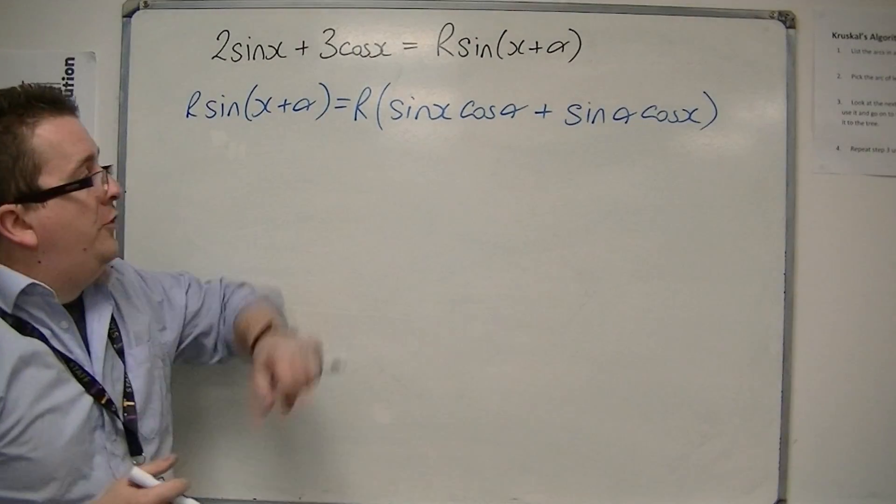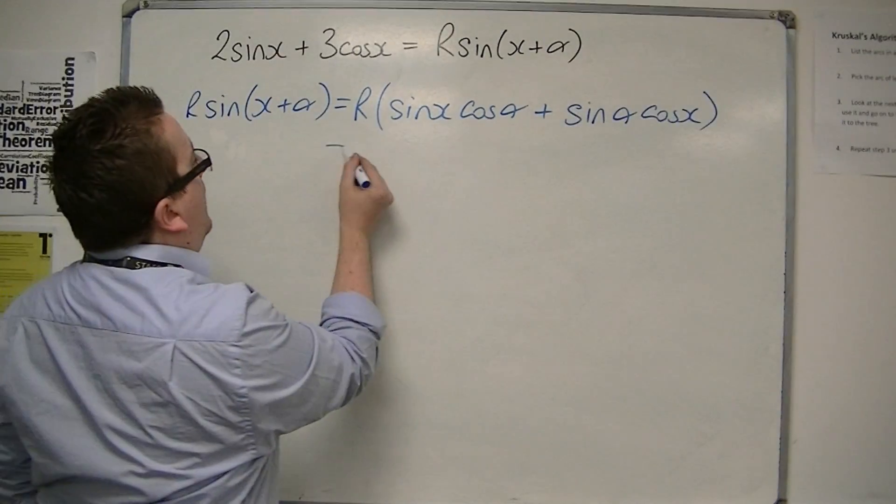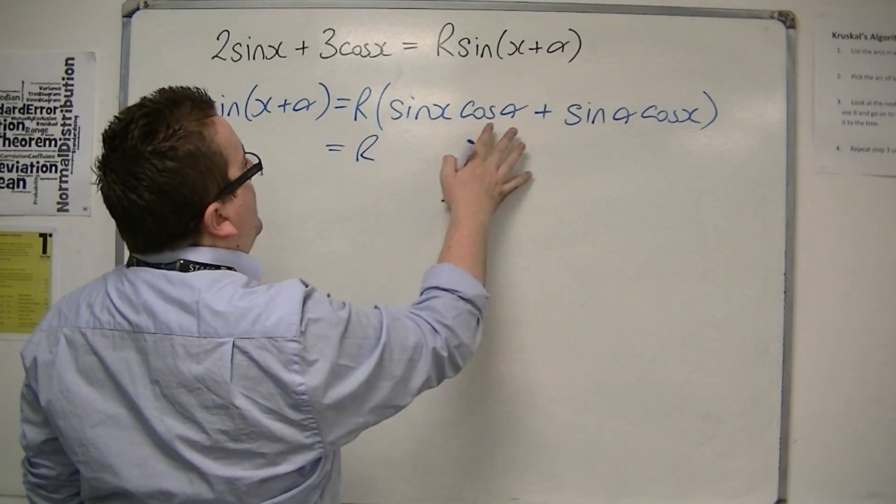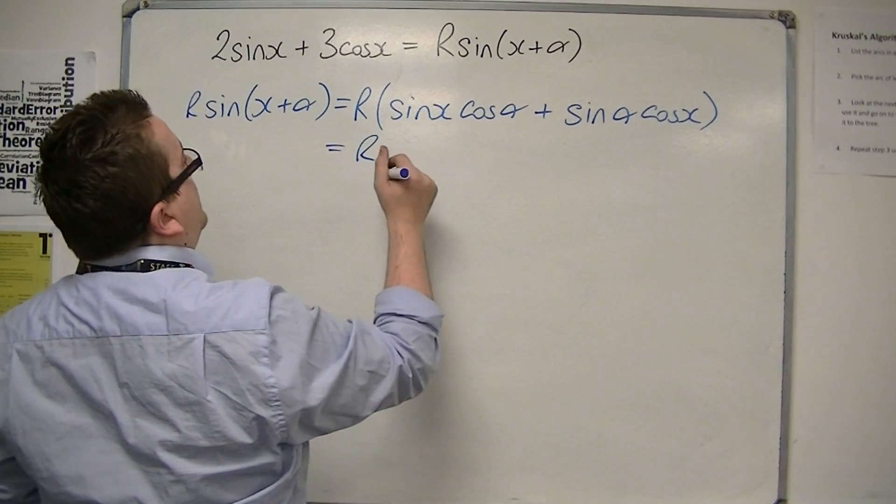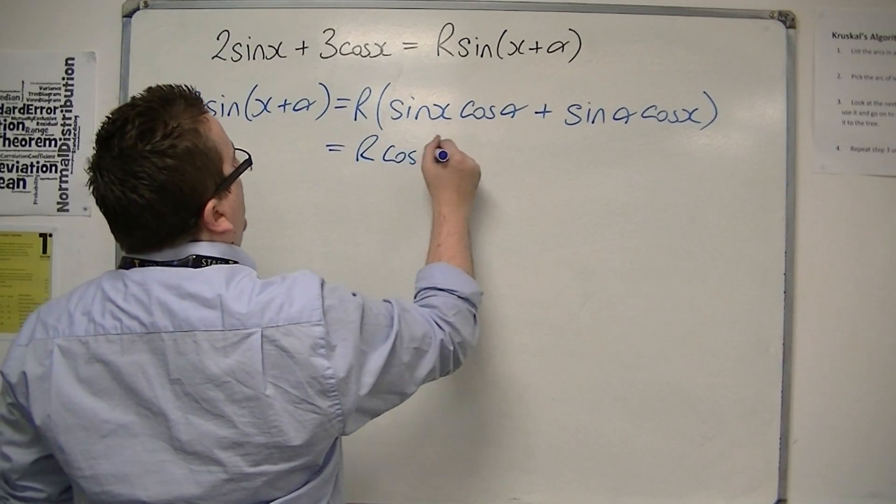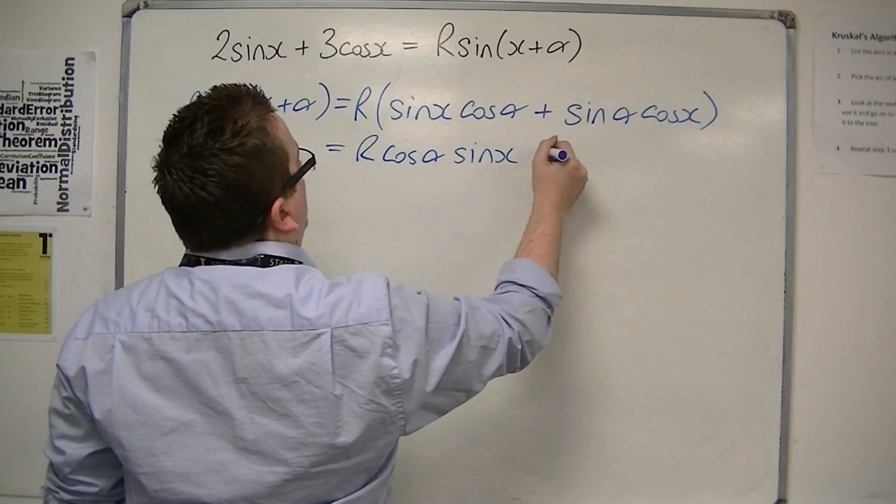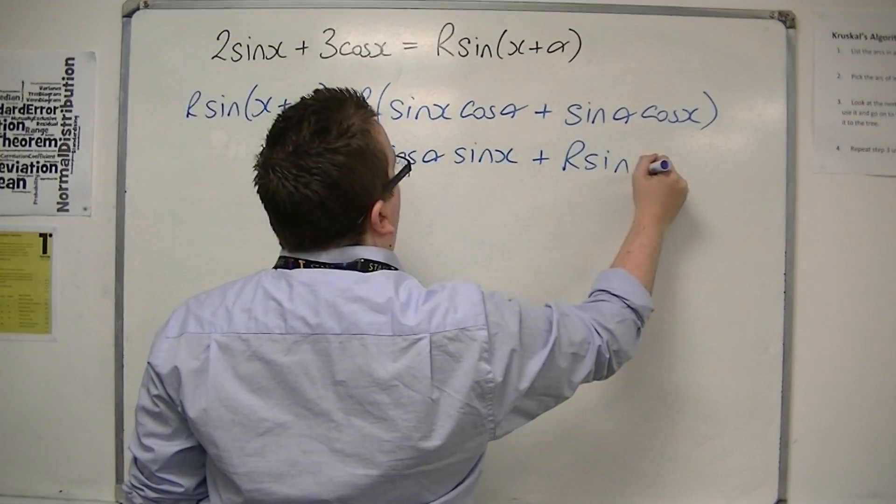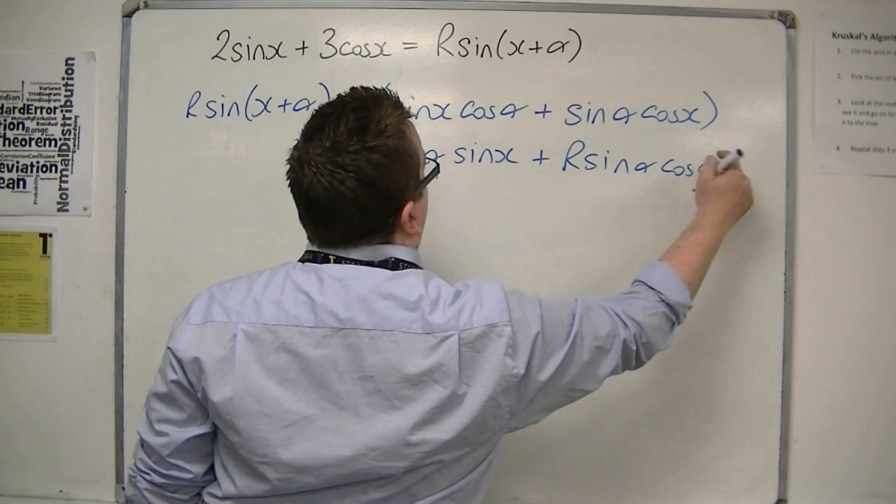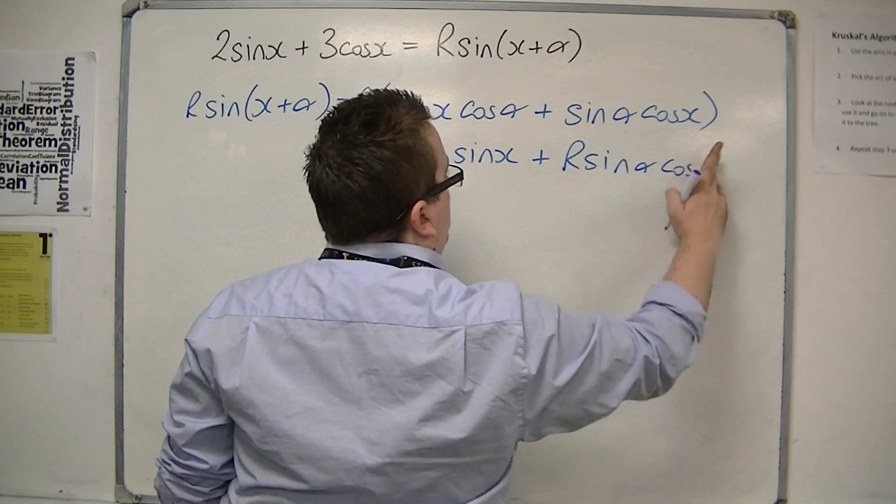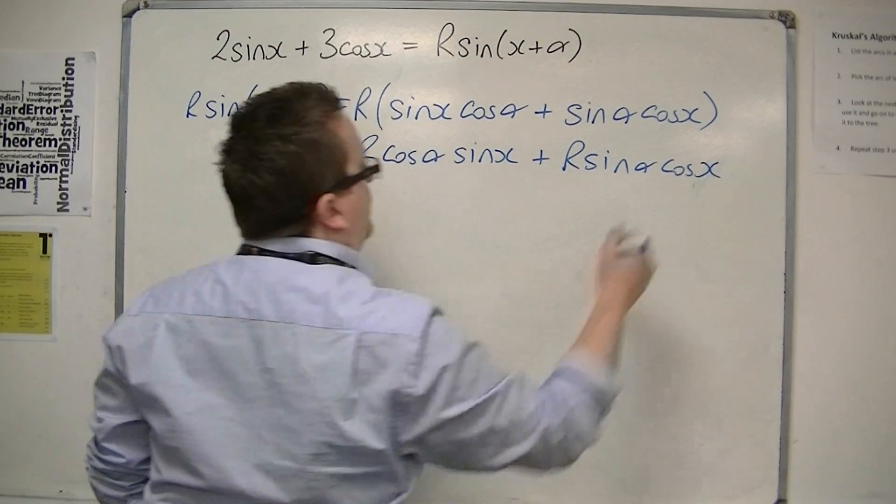Now, if I expand the bracket and make sure that the alphas are at the front, then I've got r cos α sin x plus r sin α cos x. I said x, I've got α there.